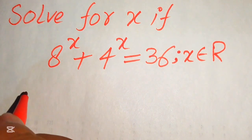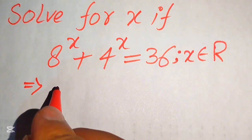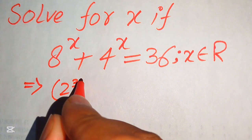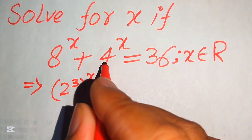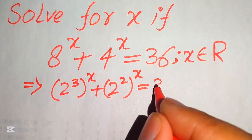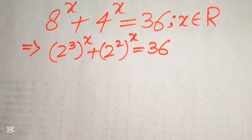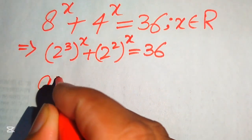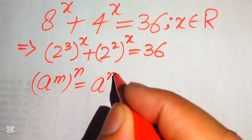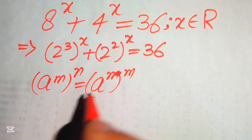First we rewrite the equation by expressing 8 and 4 in prime factor form. The prime factors of 8 are 2 cubed, so we have (2³)^x, and the prime factors of 4 are 2 squared, so we have (2²)^x equals 36. We use the exponent law: a to the power of m to the power of n equals a to the power of n to the power of m.